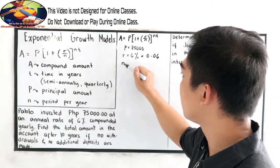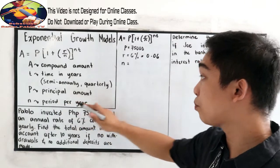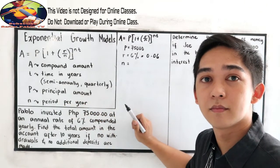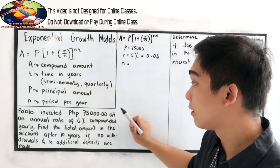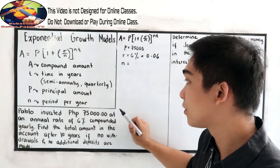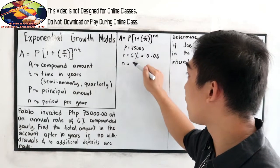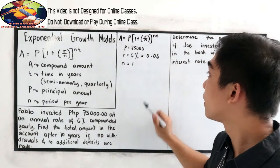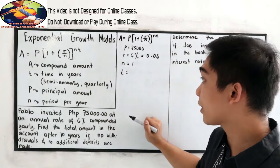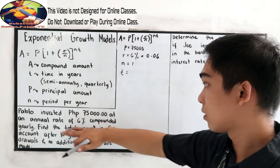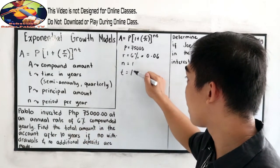And our N, N is our period per year. So, we're going to find how many periods we have. We have 1 period per year, so that will become 1. And our time is after 10 years, so time is 10.